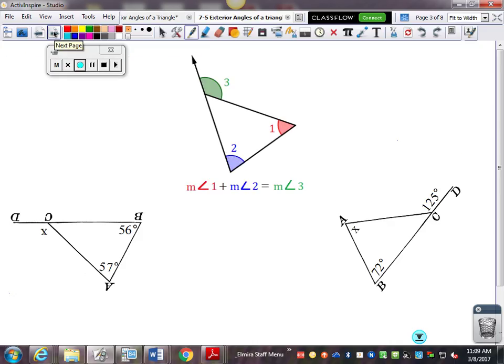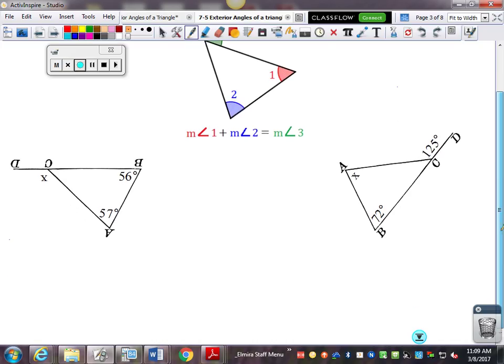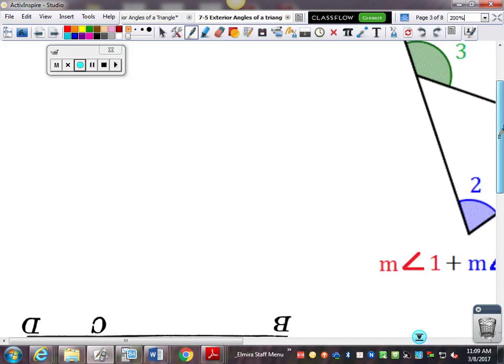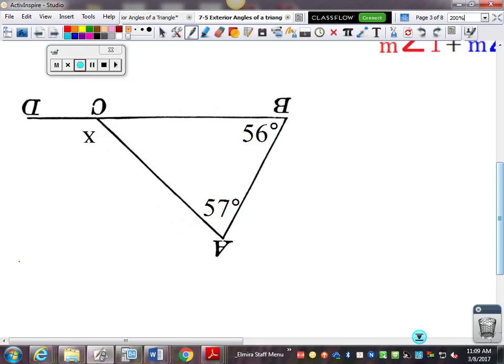And the next page here, I found this cool graphic to kind of show the relationship, angle 1 plus angle 2 equals angle 3. So down here, I've got 57 and 56. I can turn the diagram around, it can face any direction. So if I want to know x, it would be 56 plus 57 equals 113.